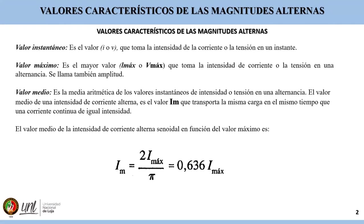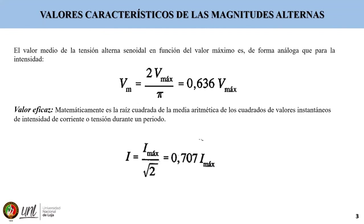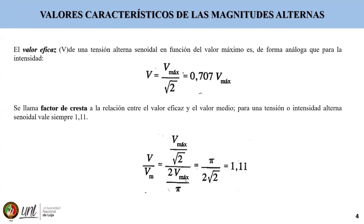Asimismo, el valor medio de la tensión alterna senoidal, en función del valor máximo, va a ser igual a 2 por voltaje máximo entre pi, o de forma resumida, 0,636 por voltaje máximo. Y el valor eficaz es la raíz cuadrada de la media aritmética de los cuadrados de los valores instantáneos de intensidad o tensión durante un periodo, o lo que es igual a 0,707 por intensidad máxima. De forma análoga, el valor eficaz de una tensión alterna senoidal va a ser 0,707 por voltaje máximo.